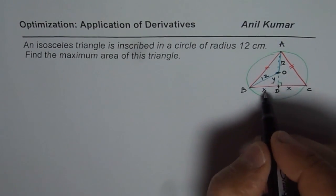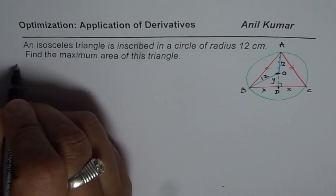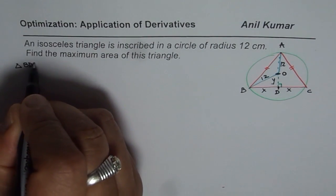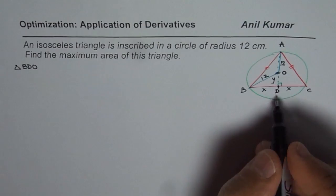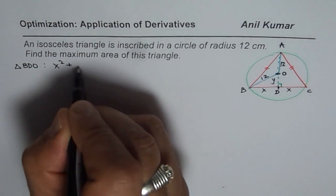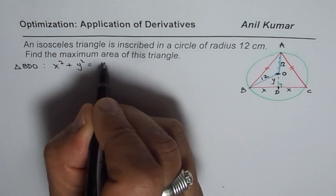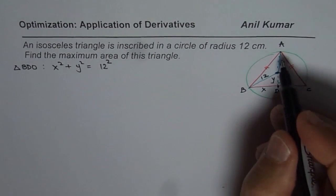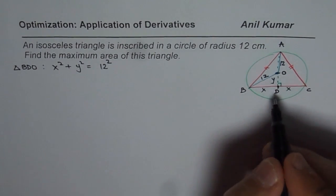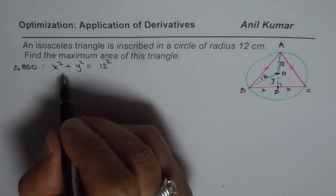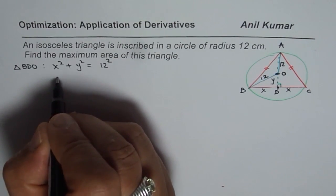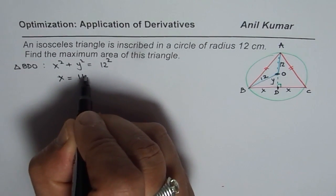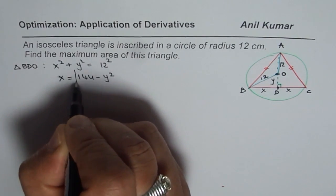OD is Y. The radius OB is also 12. From right triangle BDO, we know that X² + Y² = 12² = 144. That is one equation. From here we can write X equals square root of 144 minus Y².